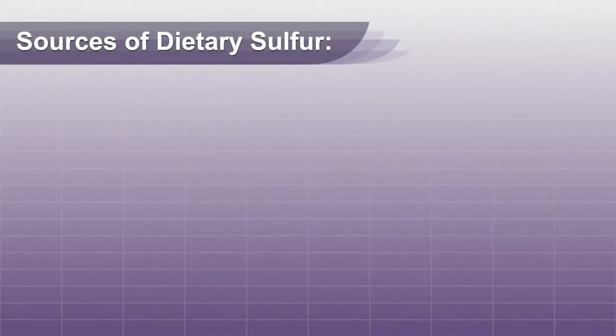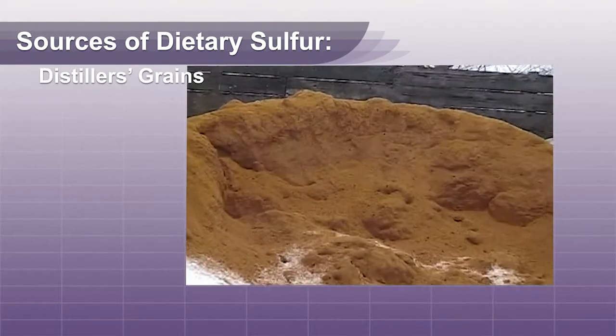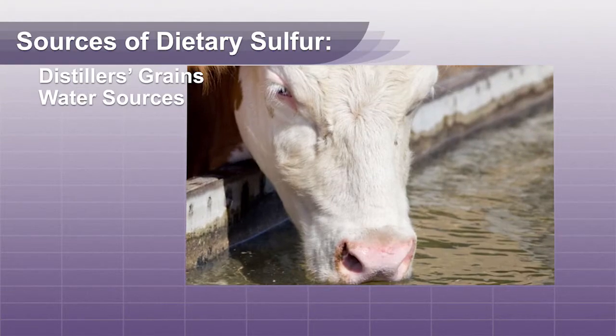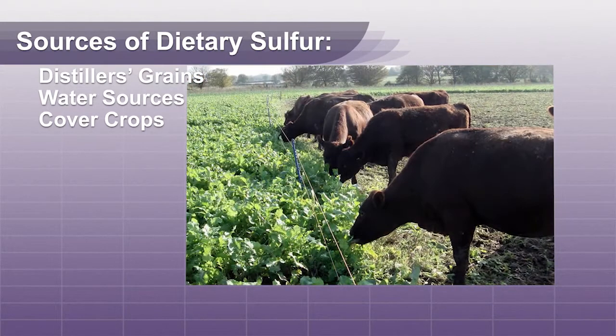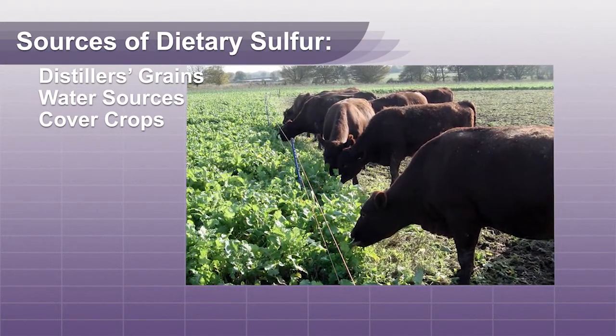Sources of dietary sulfur include distiller's grains, a water source, and cover crops like radishes and turnips.